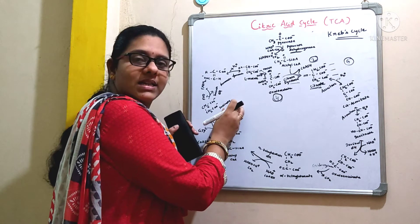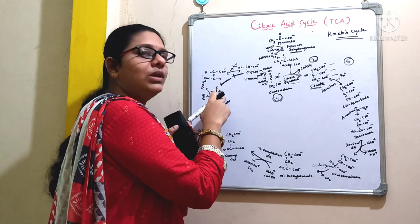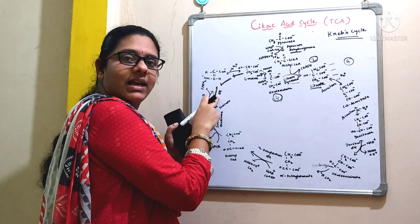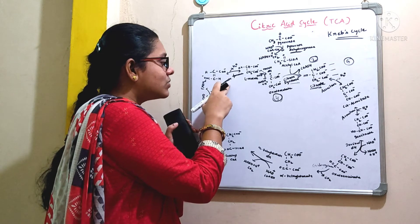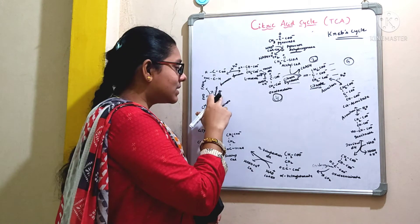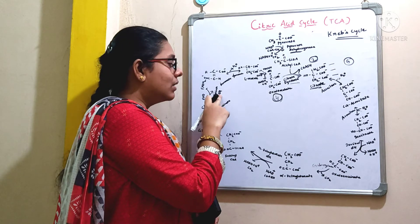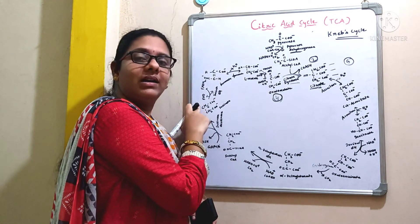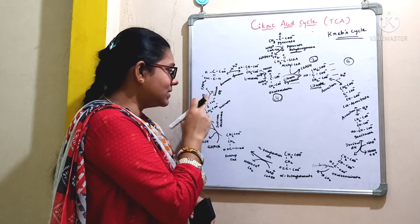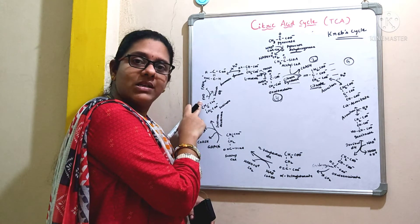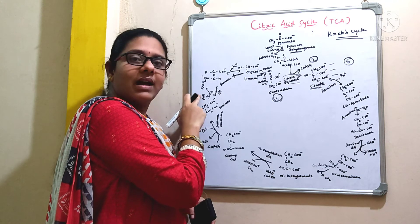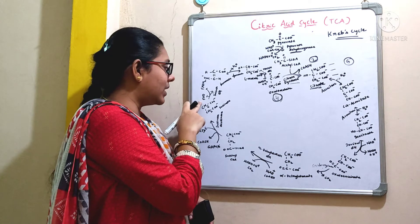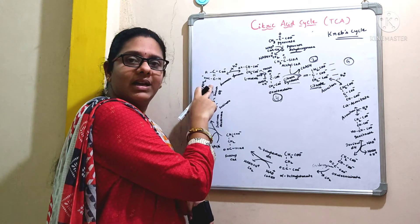This so-formed succinate will again undergo the process of dehydrogenation by the action of an enzyme called succinate dehydrogenase, giving rise to a compound called fumarate. As it is a step of dehydrogenation, those released hydrogen atoms will be transferred directly to flavoprotein. Flavoprotein contains FAD — flavin adenine dinucleotide — and after the acceptance of hydrogen atoms by FAD, it will be converted to FADH2.